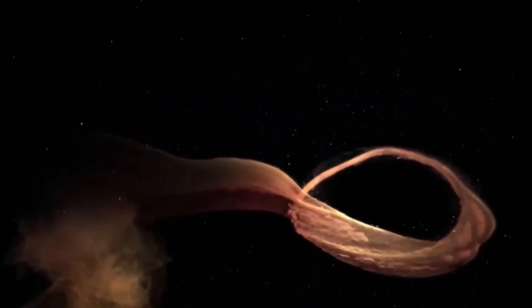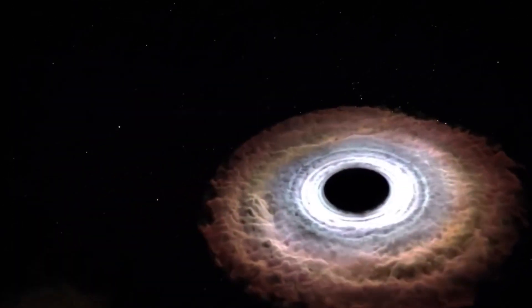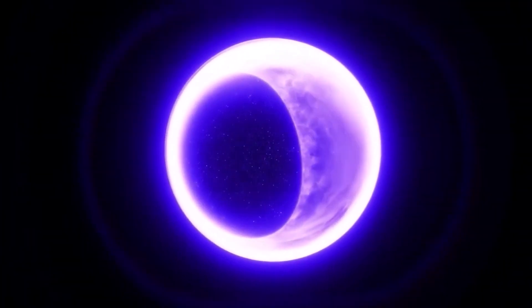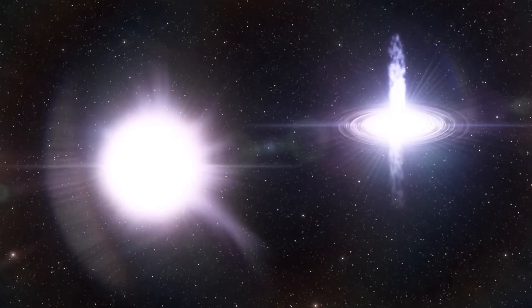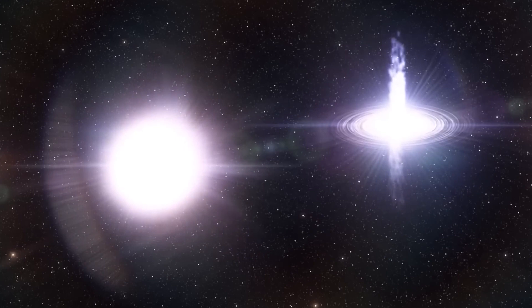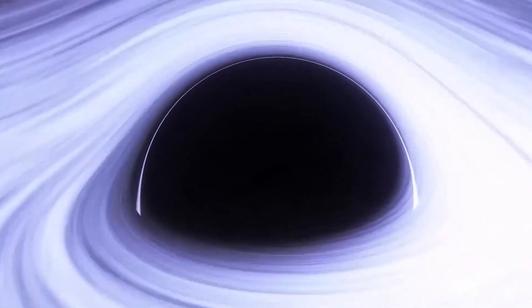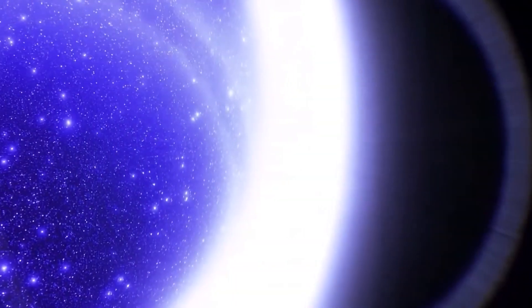In 2019, scientists were able to capture the first-ever image of a black hole's event horizon using a network of radio telescopes, known as the Event Horizon Telescope. The image showed a bright ring of light surrounding the black hole, caused by the intense gravitational lensing of nearby gas and dust.